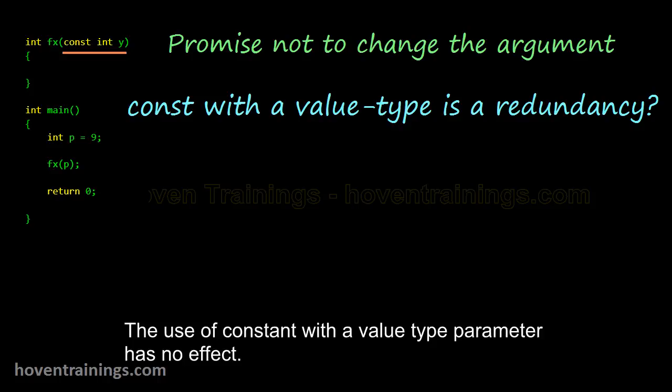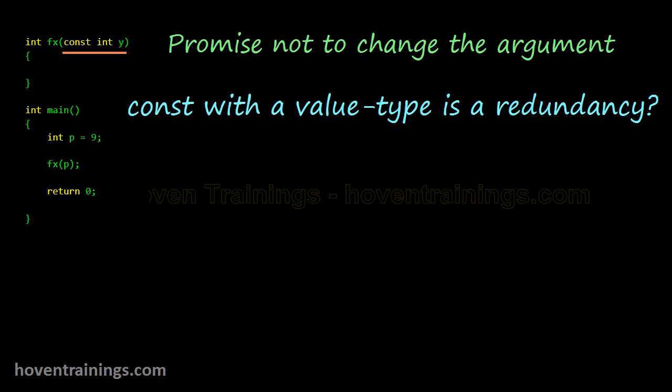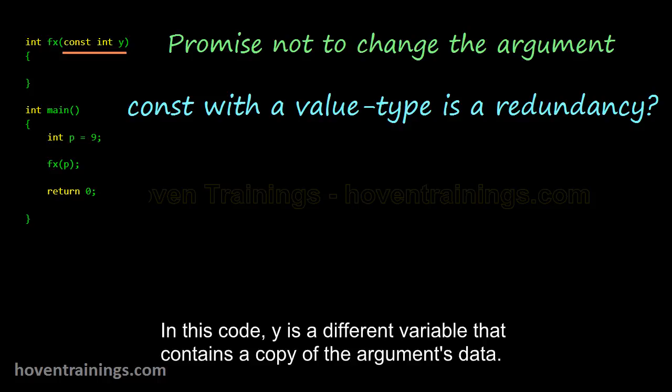The use of constant with a value type parameter has no effect. You can easily see why. In this code, y is a different variable that contains a copy of the argument's data.